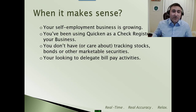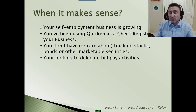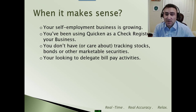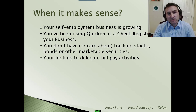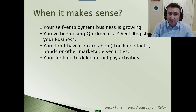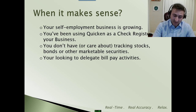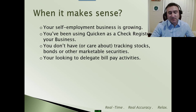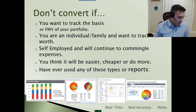So when does it make sense to actually do the conversion from Quicken to QuickBooks? Let's say you were a self-employed business and now you're growing — you used to use Quicken, but as you grow, QuickBooks is absolutely the most appropriate program for you. If you've always been in business but you're just using Quicken as a check register, or even as an individual using Quicken as a check register, you might be able to make the move. If you don't have or care about tracking any stocks, bonds, or marketable securities — again, that's the biggest differentiation — then it can make sense to move over to QuickBooks. If you're looking to delegate bill pay activities or take advantage of any of those third-party applications, absolutely — QuickBooks is a good place to be.